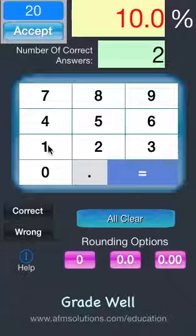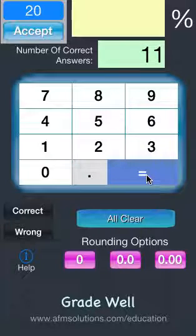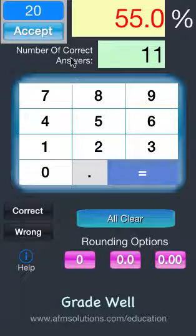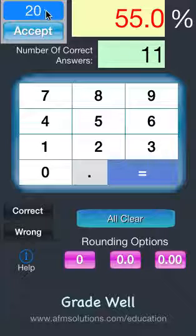Somebody who got 11 got 55%. And now let's go ahead and change the number of questions here. Click on the number 20 in the upper left corner.